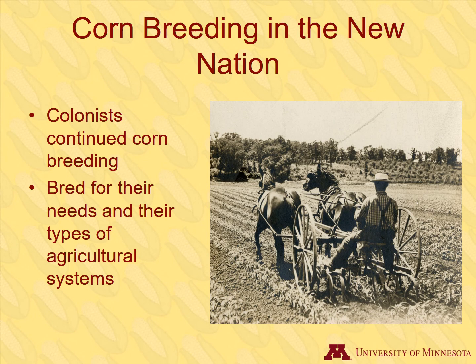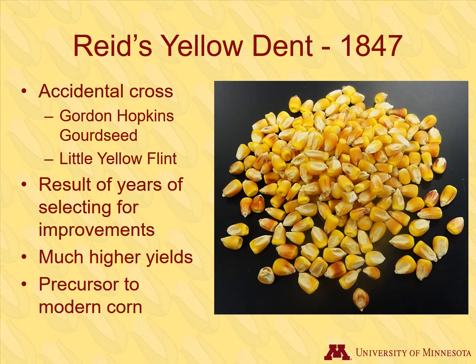The colonists not only used corn in their agricultural systems, they also began to do their own selection and breeding to make corn suit their purposes. One early breakthrough in corn development was Reed's Yellow Dent Corn. In 1847, a farmer named Robert Reed in Illinois accidentally mixed two corn varieties within the same field, inadvertently crossing a variety called Gordon Hopkins Gourd Seed and a variety called Little Yellow Flint. The farmer spent many years selecting for improvements, and the end result was Reed's Yellow Dent — this corn had much higher yields than either parent variety. Modern corn that we grow today is derived from this corn.